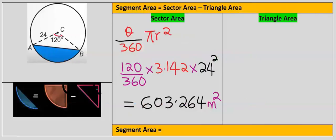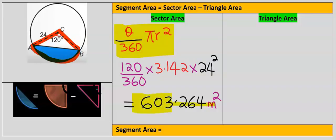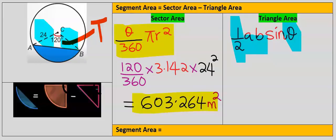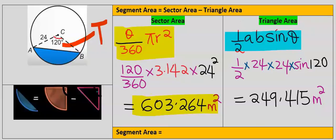In step two we choose the right formula, and in step three we write out the formula and substitute. The area of the sector works out to 603.264 square meters. Next, we find the area of the triangle using one-half multiplied by the two radii multiplied by the sine of the central angle. The area of the triangle is 249.415 square meters.